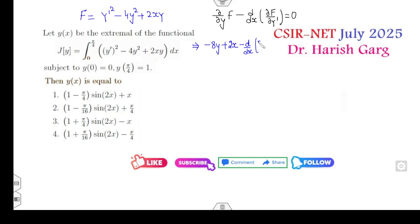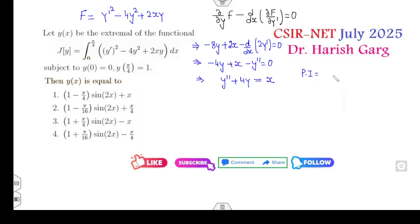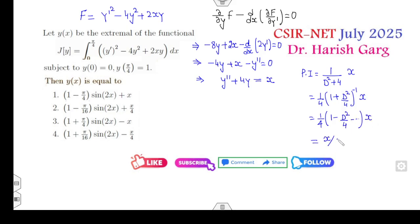Computing the Euler equation: ∂f/∂y = -8y + 2x, and d/dx(∂f/∂y') = d/dx(2y') = 2y''. This simplifies to -4y + x - y'' = 0, i.e., y'' + 4y = x. To find the particular integral, compute (1/(D² + 4))·x = (1/4)·(1/(1 + D²/4))·x. Using the binomial expansion, this gives x/4. Look at the options — only option B contains x/4, so B is the right answer.